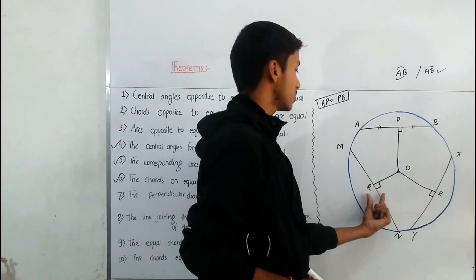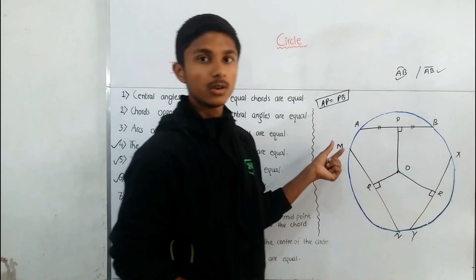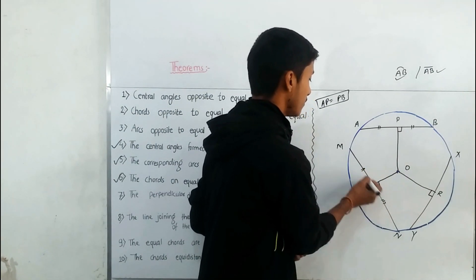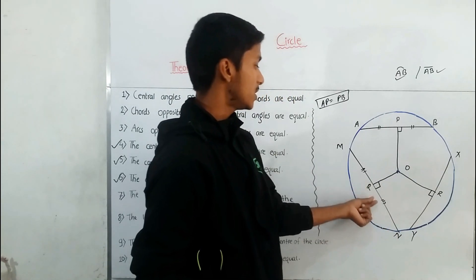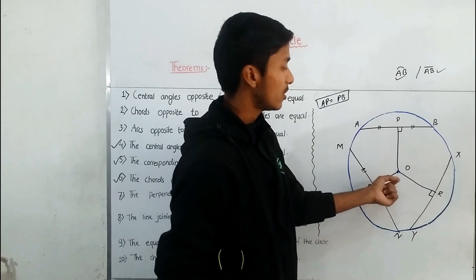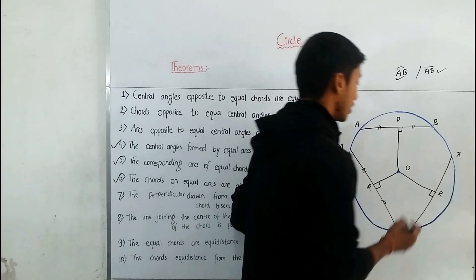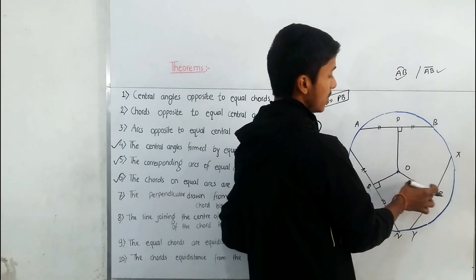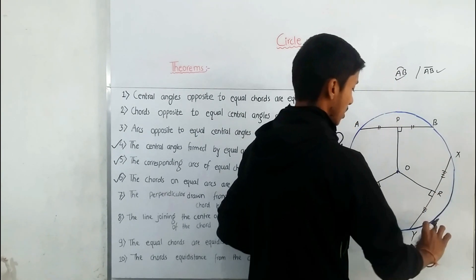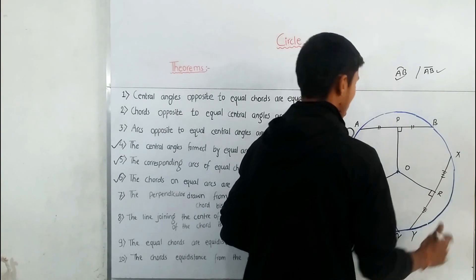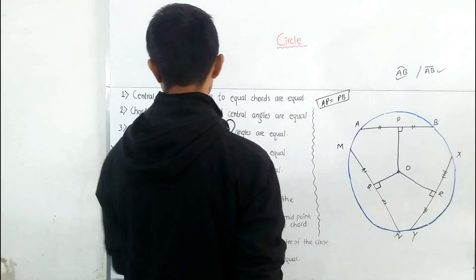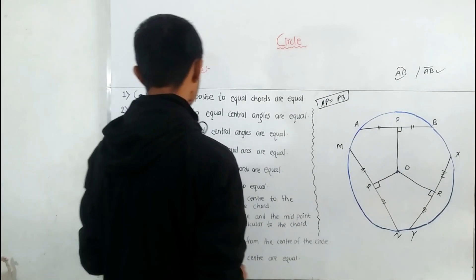Similarly, OQ is the perpendicular drawn from the center to chord MN, so MQ is equal to QN — Q is the midpoint. Likewise, OR is the perpendicular drawn from the center to chord XY, so XR is equal to RY. This completes Theorem 7.